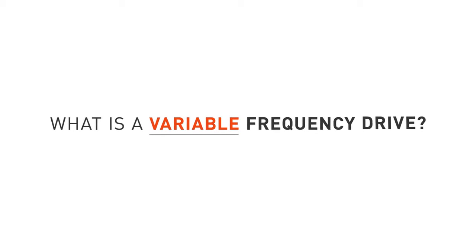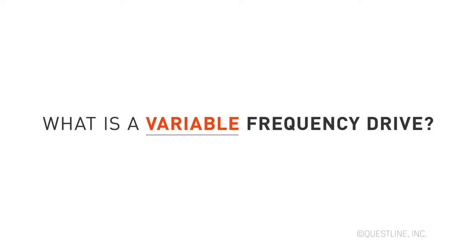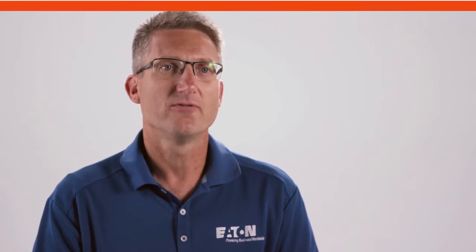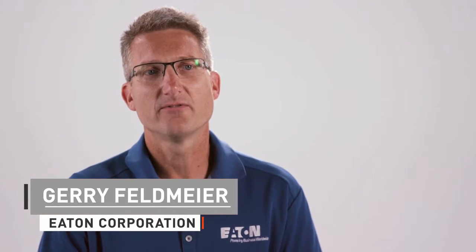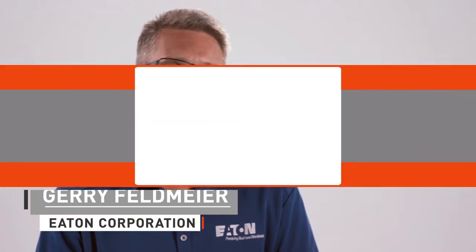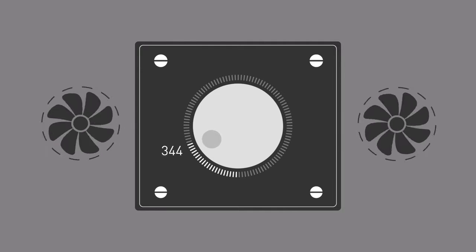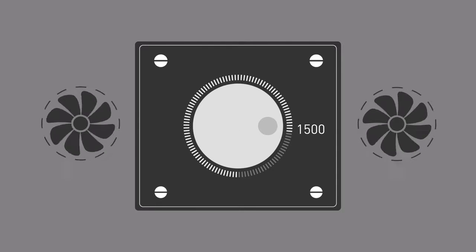A variable frequency drive is a device which can vary the speed of a motor across the entire range of that motor. So if I have a motor which can run from zero to 1800 RPM, a variable frequency drive can run that motor at 300 RPM or at 1500 RPM at any point in time.